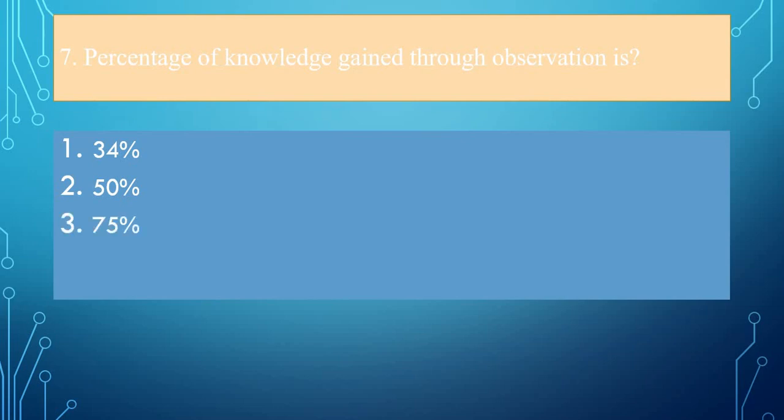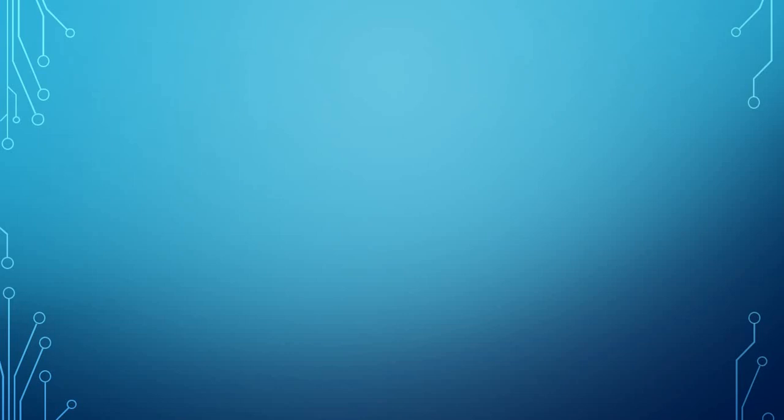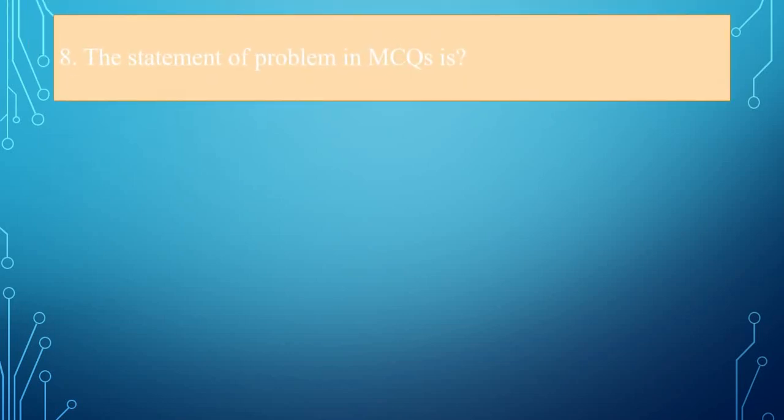Question number 7: Percentage of knowledge gained through observation is 34%, 50%, 75%, or none of the above? The correct answer is 75%.